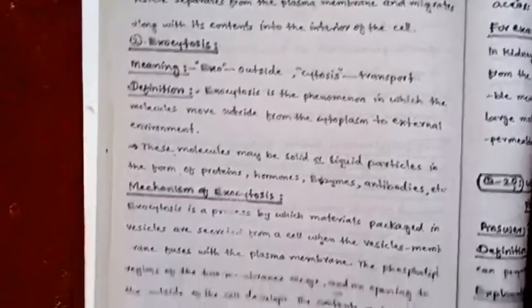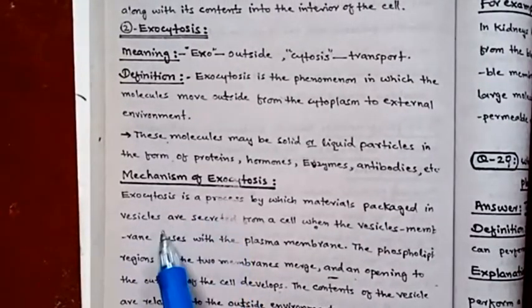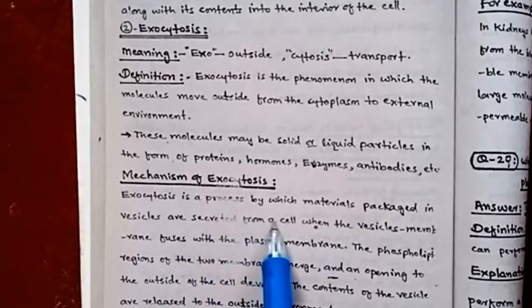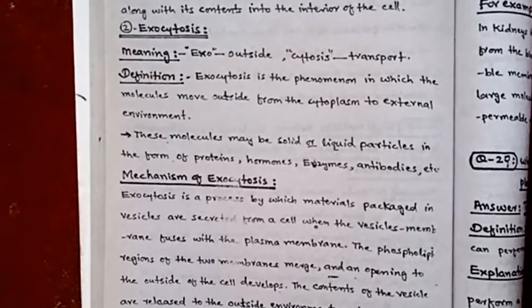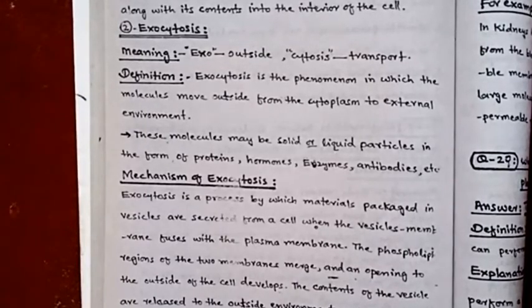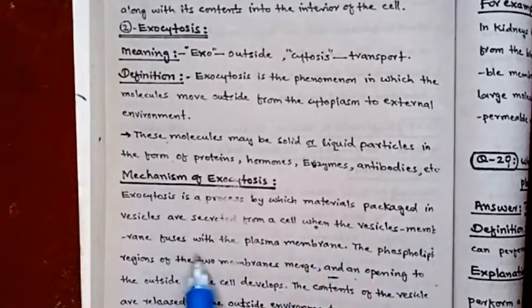These molecules may be solid and liquid particles in the form of proteins, hormones, enzymes, antibodies. The mechanism: exocytosis is the process by which material packed into a vesicle is removed from the cell. The vesicle membrane fuses with the plasma membrane.